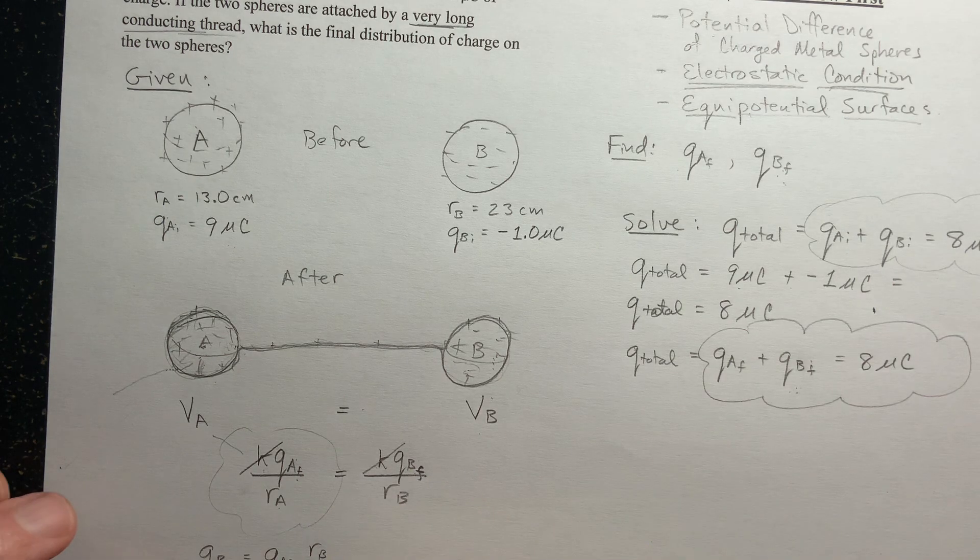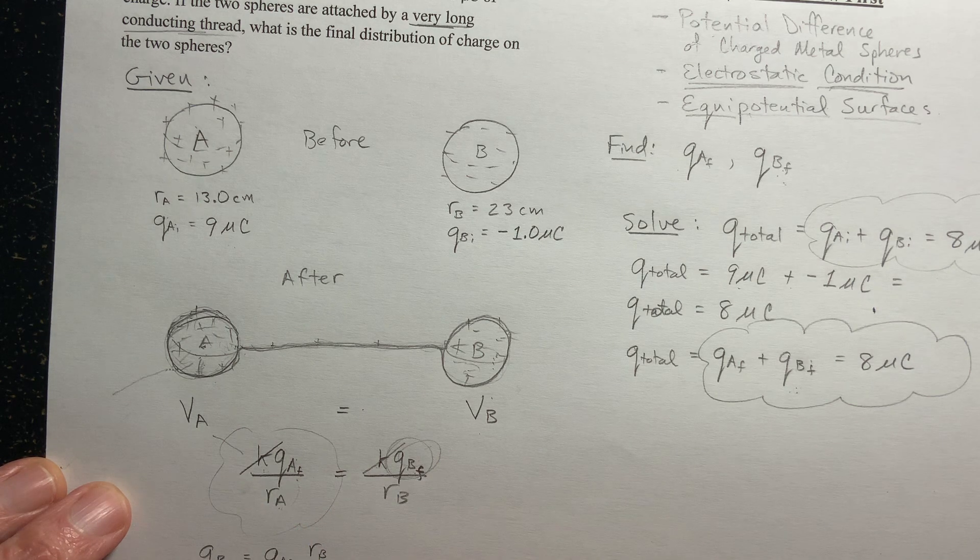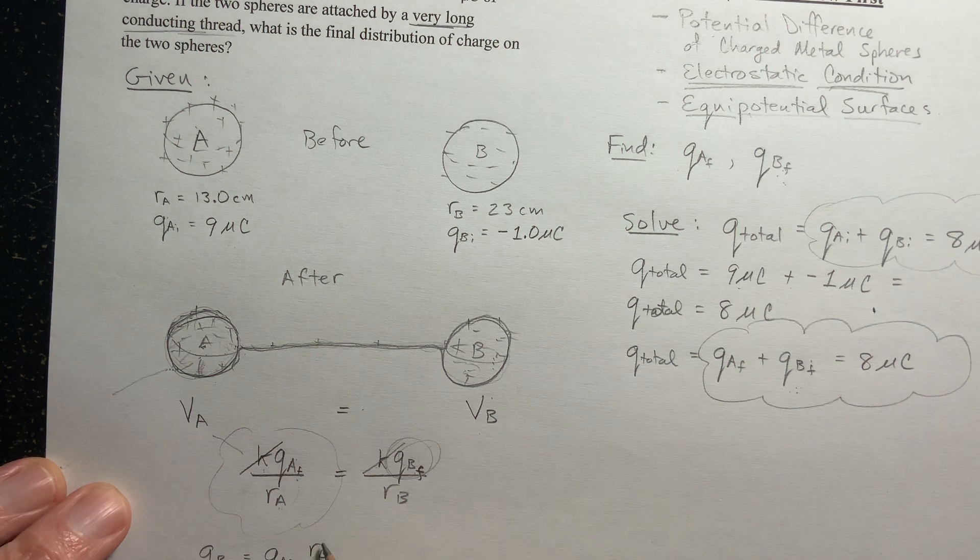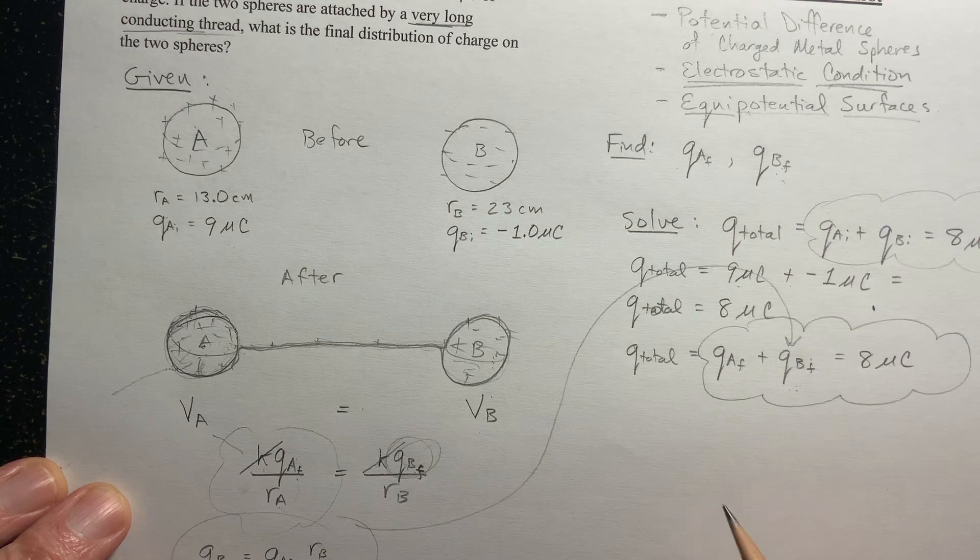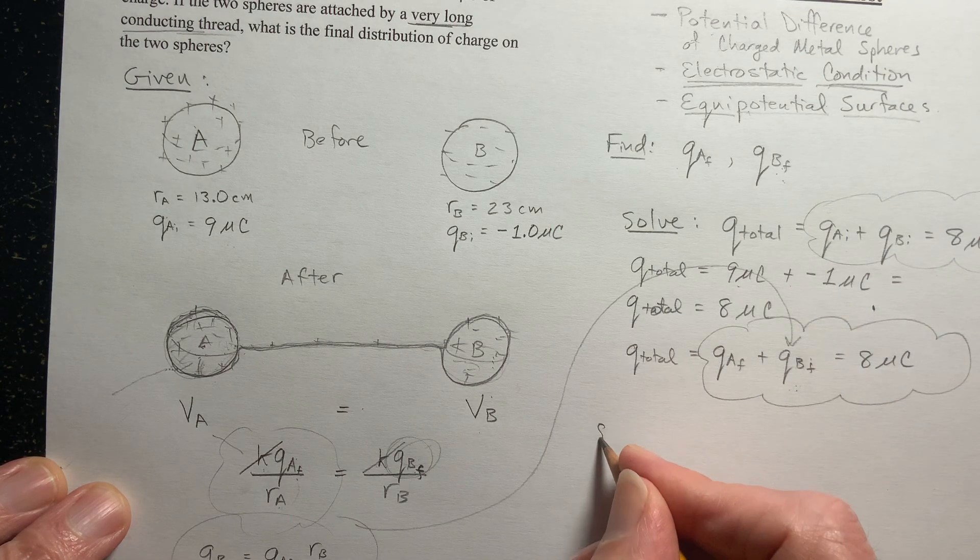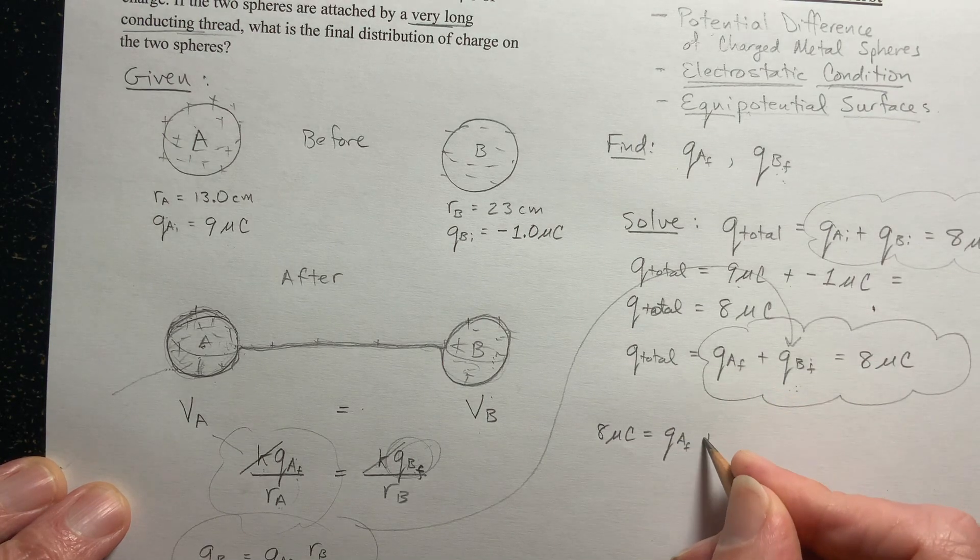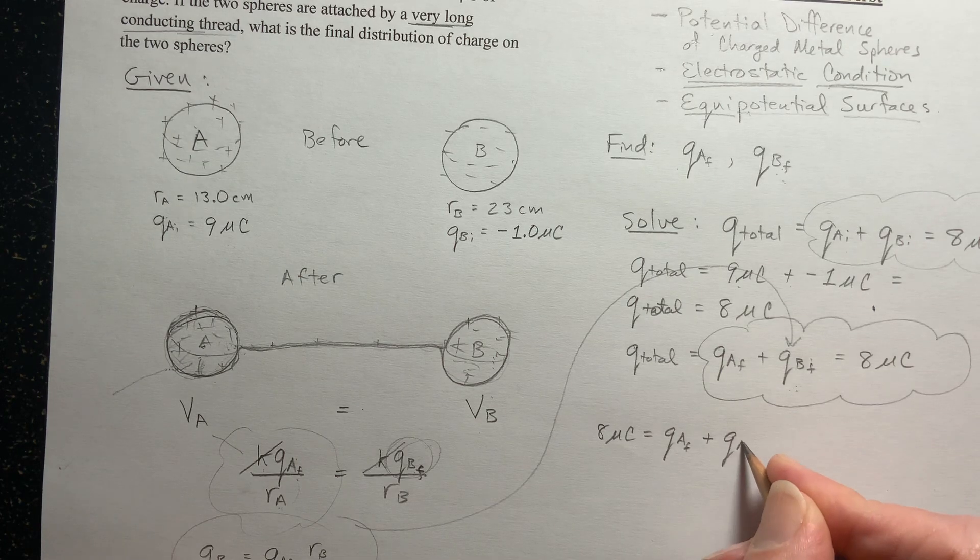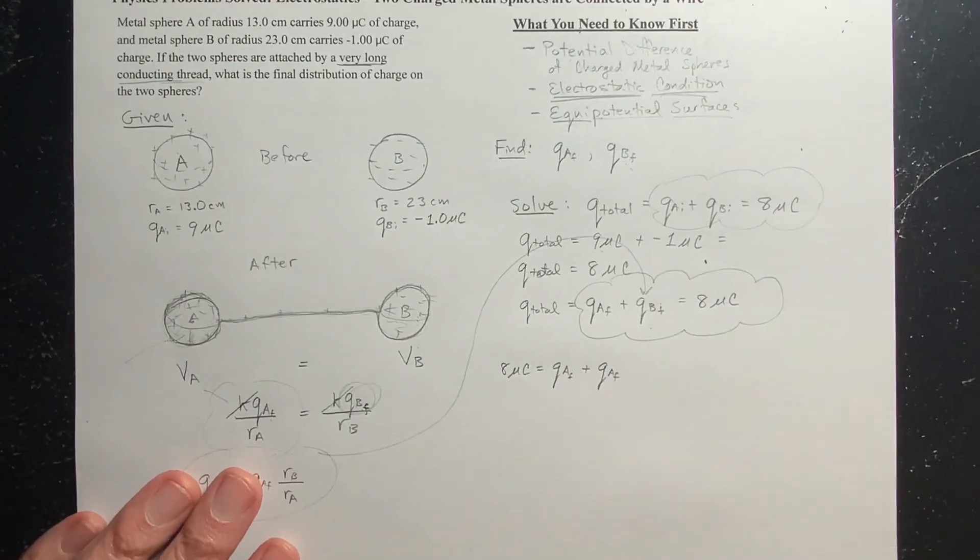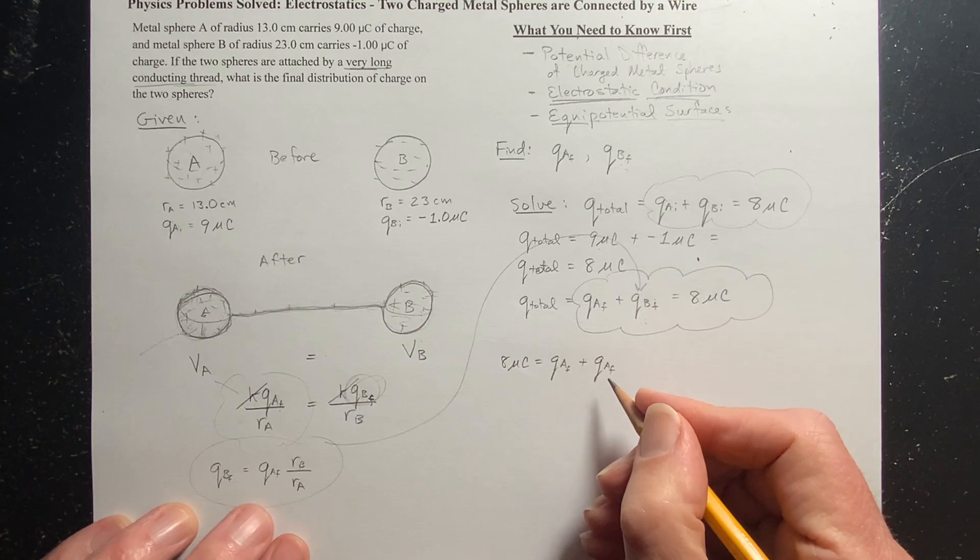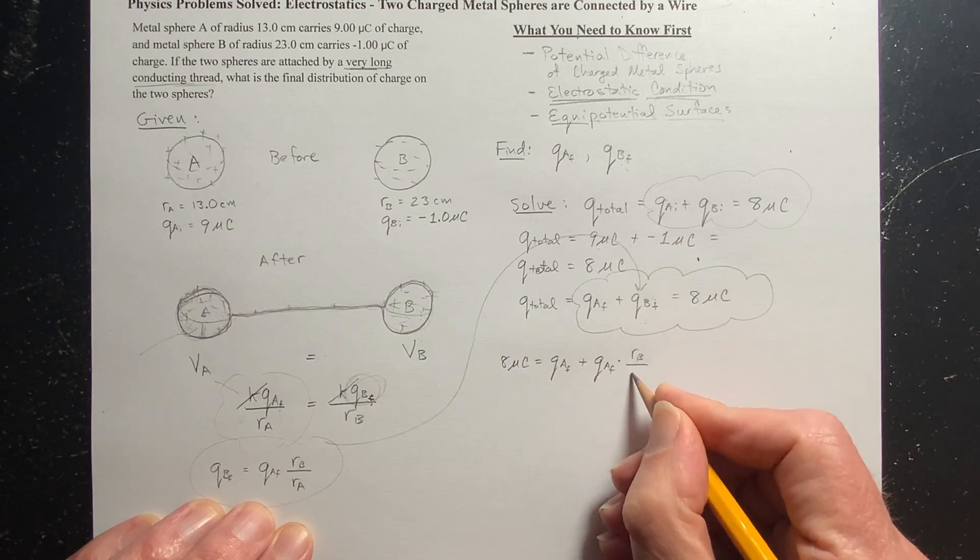So I just basically solve for this. This times this divided by that, cross multiply and divide. Well, now what this means, I can substitute this into here. So let's do that. So I know that 8 microcoulombs is equal to QA final plus QA final times RB over RA.